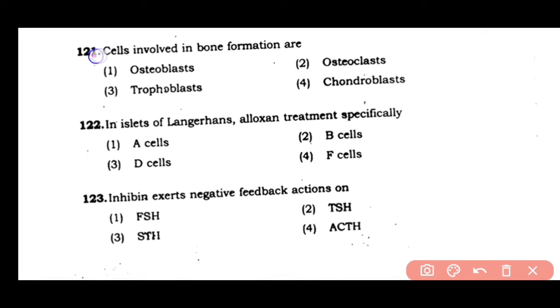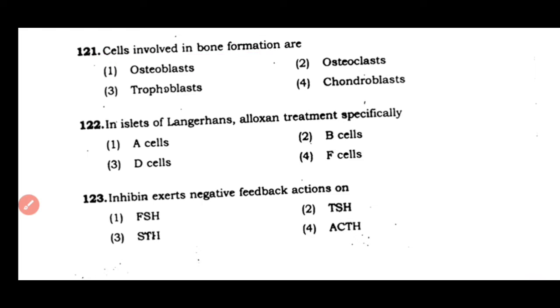Question number 121: The cells involved in bone formation are — (1) osteoblast, (2) osteoclast, (3) trophoblast, (4) chondroblast. The correct answer is option 1. Osteoblasts are bone-forming cells, while osteoclasts are bone-dissolving cells.